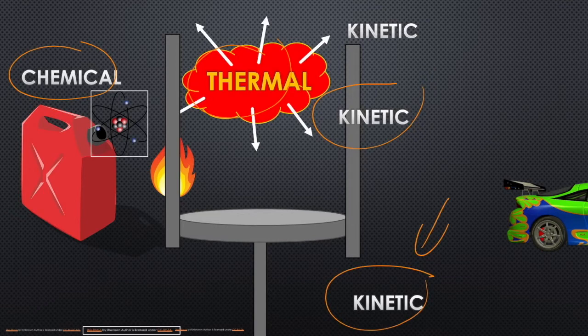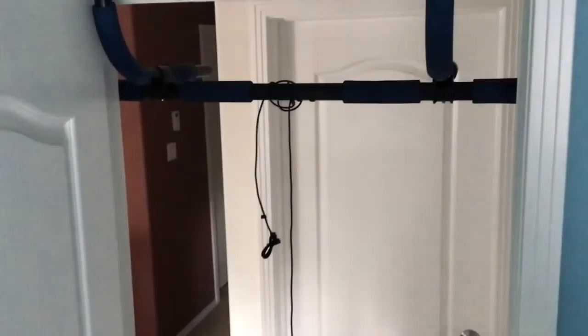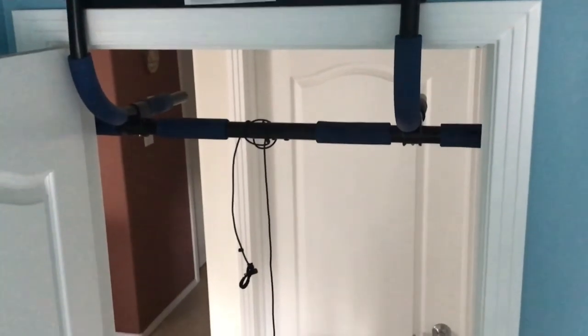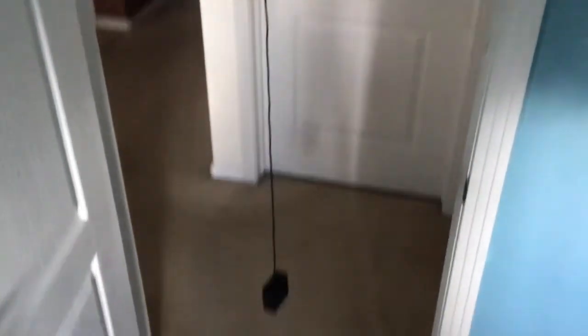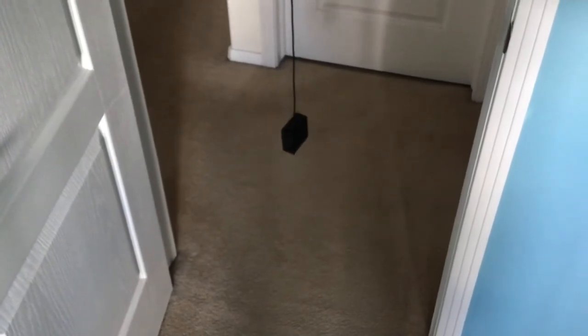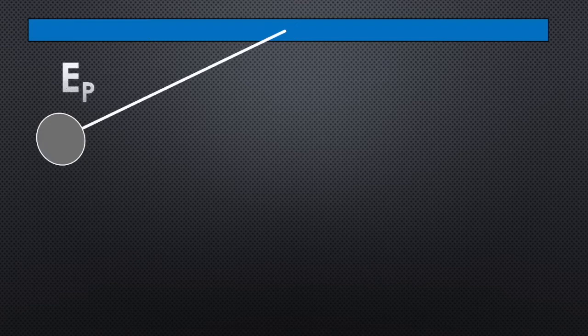That's the kind of conversion we're looking at — how you can start with one type, go through a whole bunch of conversions, and end up with something that we want. The classic example of simple energy conversions is a pendulum. Normally we'd have a steel mass hanging from the roof, but here we're going to use a charging cord from a computer to demonstrate a pendulum and its motion.